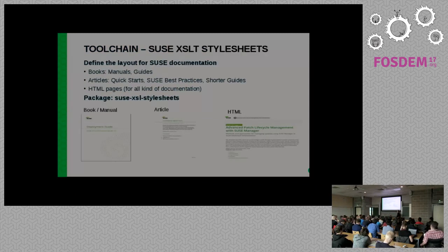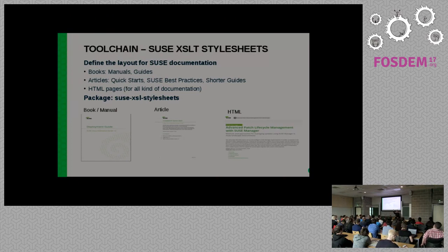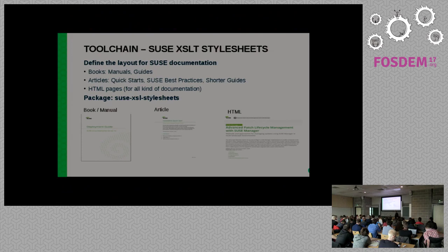Next in the toolchain we have stylesheets. You have the XML and you need a stylesheet to generate different output formats — for standalone books, big manuals, single articles. There are differences: in a PDF you want URLs in links to be written out because on paper you can't click them. All of this is handled with the XSLT stylesheets.